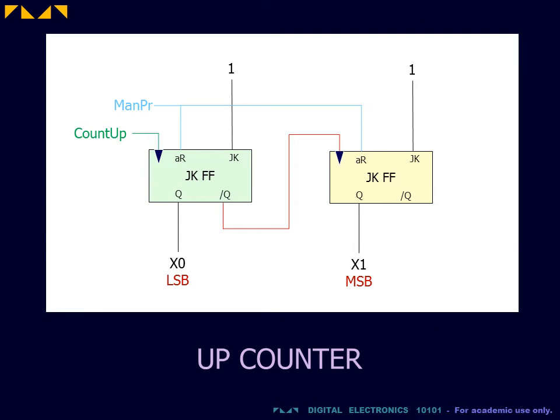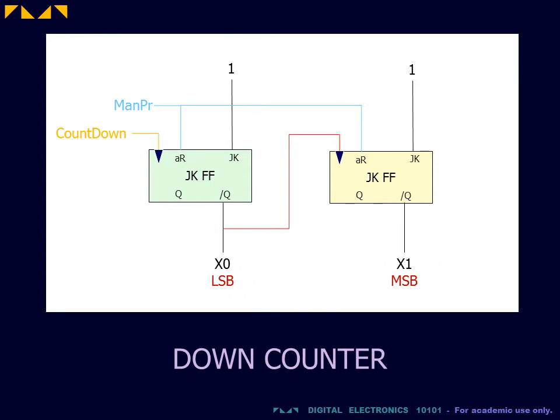For the up counter, we obtained our count from the Q output of two JK flip-flops. For the down counter, we can therefore have exactly the same circuit, but take the count from the Q bar output. While this scheme is easy to implement, it has a significant drawback.